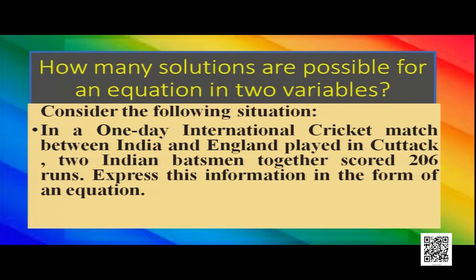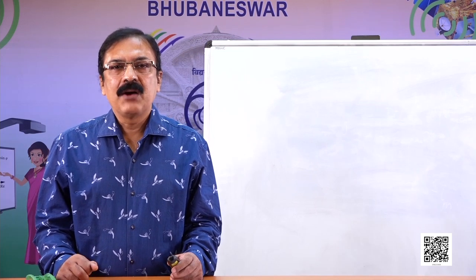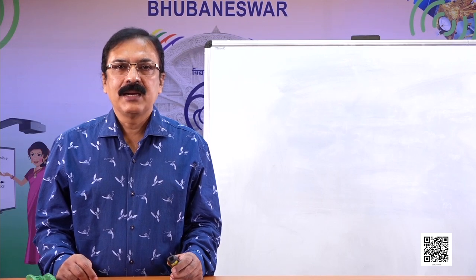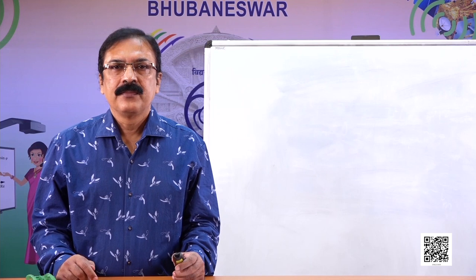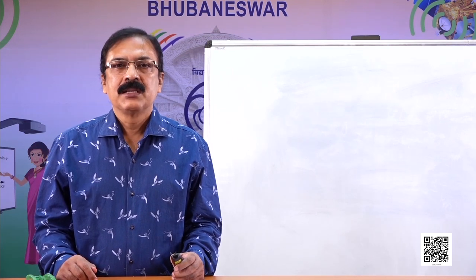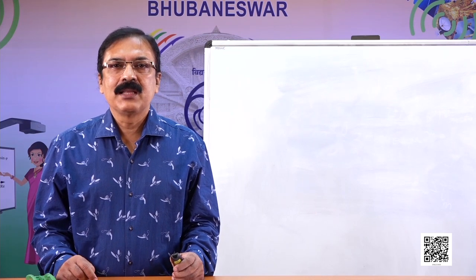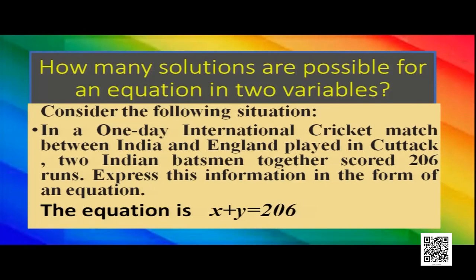In a one-day international cricket match between India and England, two Indian batsmen together scored 206 runs. Express this information in the form of an equation. We don't know which player scored how many runs. So let player 1 have scored x runs and player 2 have scored y runs. Then the sum is x plus y. Here the sum is given as 206, so we can equate these two expressions to form an equation: x plus y equals 206.